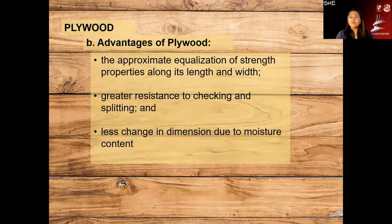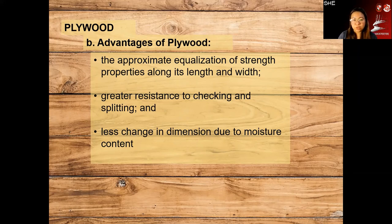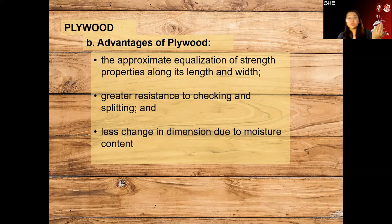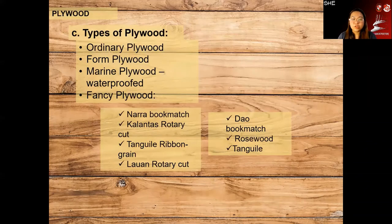Advantages of using plywood include equalization of strength properties along its length and width, greater resistance to checking and splitting, and less change in dimension due to moisture content. Being factory-made, its dimensions are more accurate. There are also different types of plywood: ordinary plywood, form plywood, marine plywood which is waterproof, and fancy plywood. The most recommended is marine plywood.